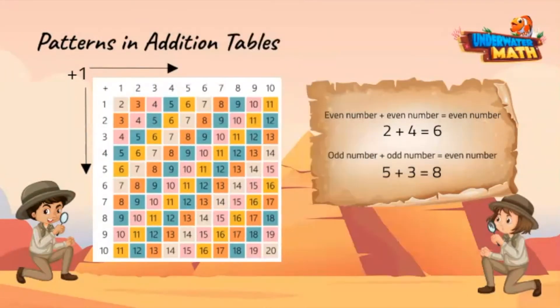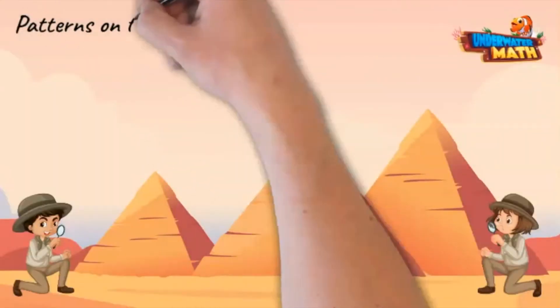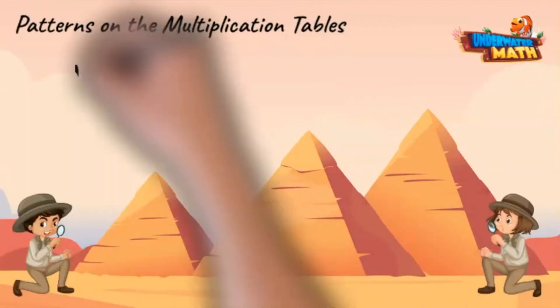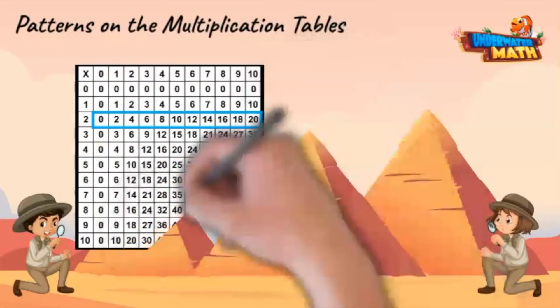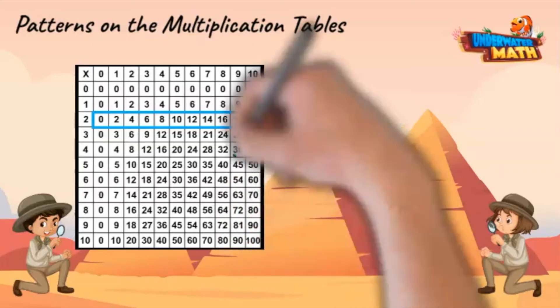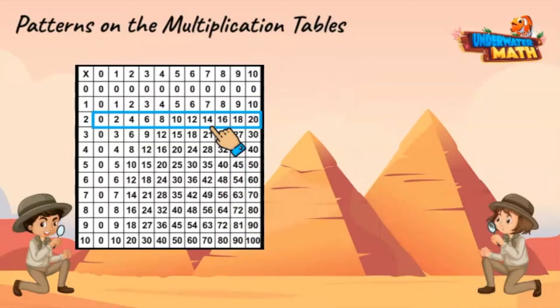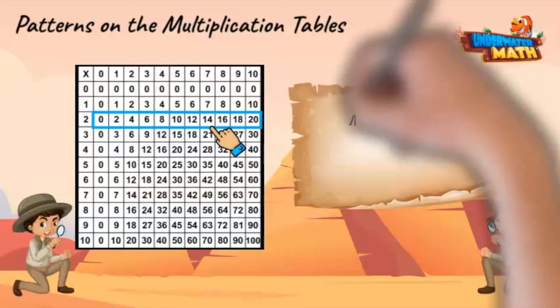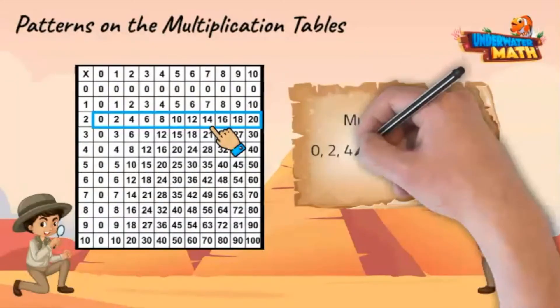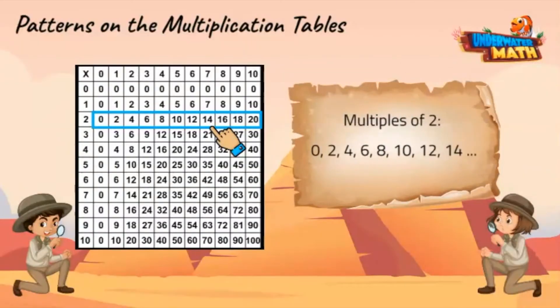Let's now explore patterns on the multiplication table. Look at the row next to the two highlighted in blue. What do you notice about these numbers? They are skip counting by twos. I think they are called multiples of two. That's right.